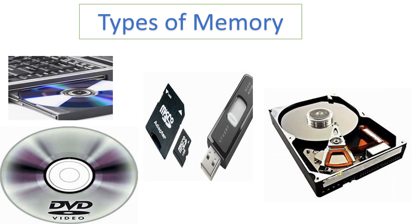Primary memory and secondary memory are the two types of computer memory. Hardware comes under the internal storage device. CD, DVD, pen drive and memory card come under the external storage devices.